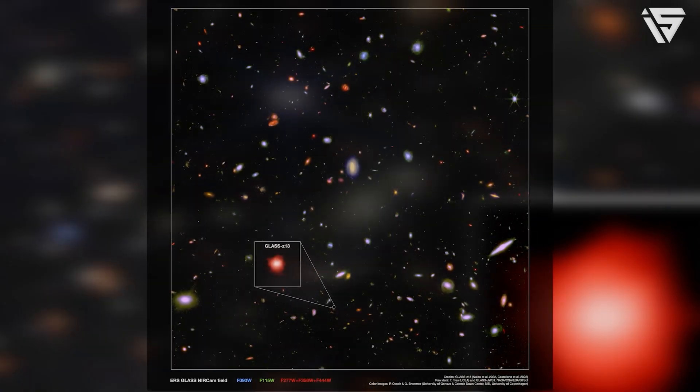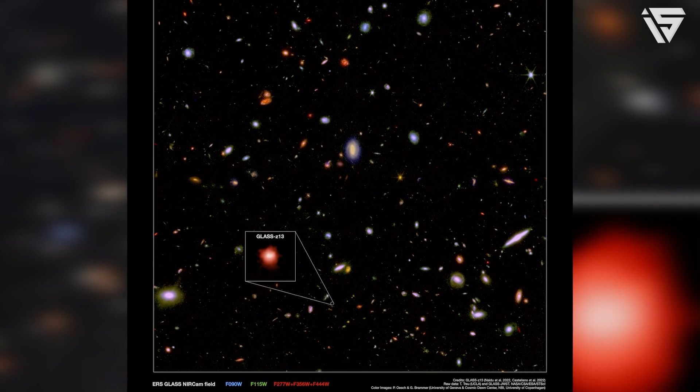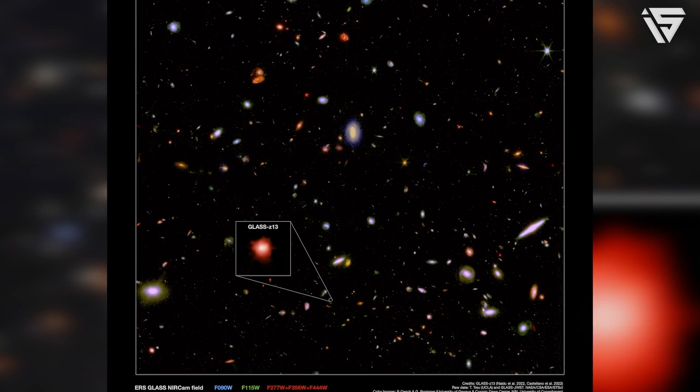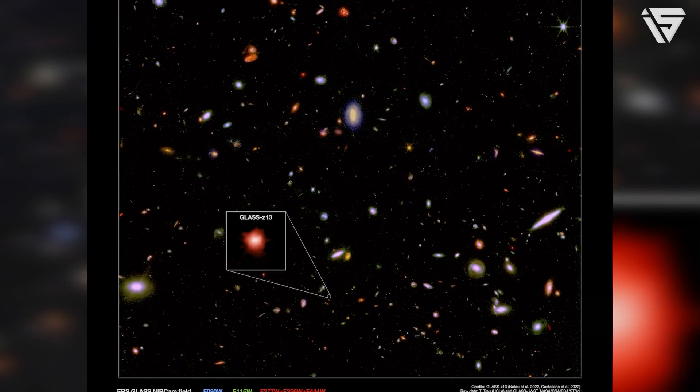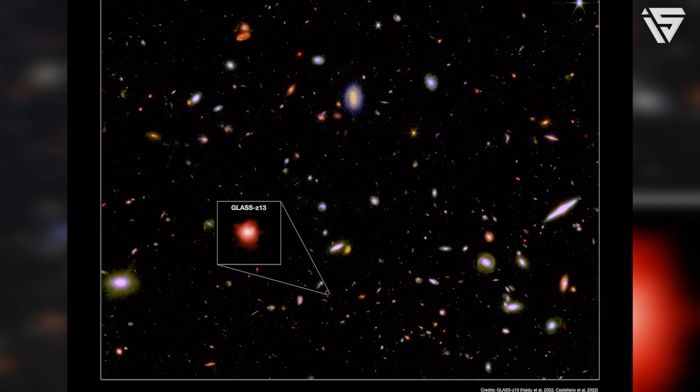That's right, as you know, GLZ 13 has a mass of a billion solar masses, and this entirely opposes the star formation models.